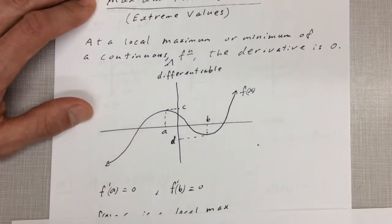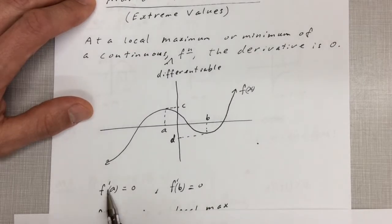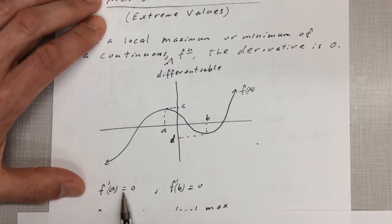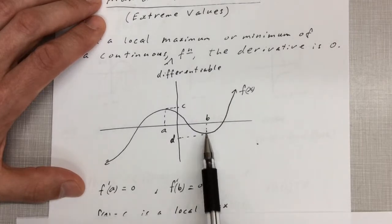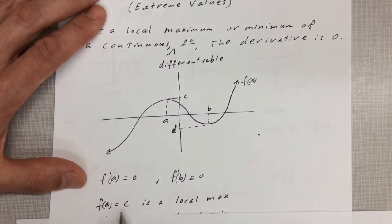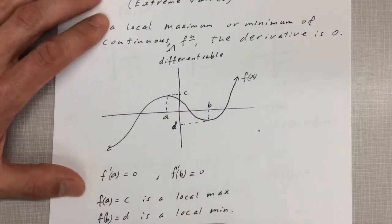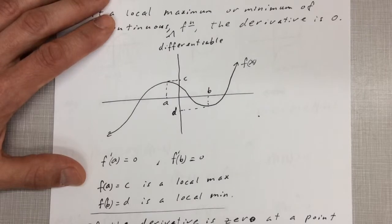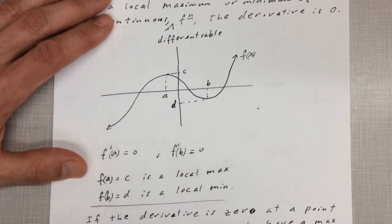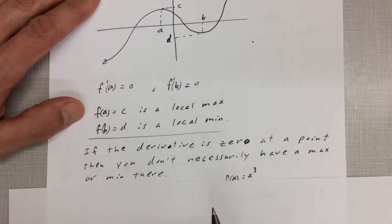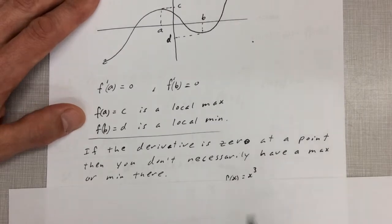To determine whether a local minimum or maximum is an absolute minimum or maximum, it has to be the lowest or highest possible y value for the function. So f'(a) = 0 and f'(b) = 0 because the slopes of the tangents there are zero. f(a) = c is a local maximum; f(b) = d is a local minimum. But if the derivative is zero at a point, you don't necessarily have a max or a min.